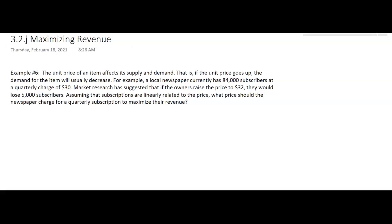In this example, we want to maximize revenue. It says the unit price of an item affects its supply and demand. If the unit price goes up, the demand for the item will usually decrease. As things get more expensive, people don't want to buy it so much.